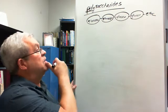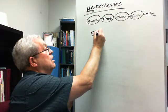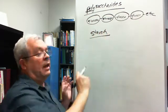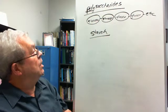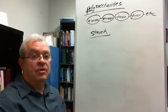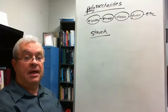One of these was starch. Starch is a bunch of glucoses put together, so the subunit of starch is glucose. There's a question on your study guide: what is the most abundant polysaccharide in nature?